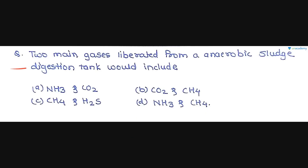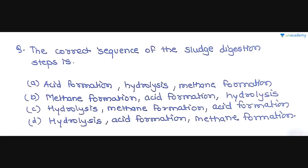The next question is: the main gases liberated from an anaerobic sludge digestion tank are CO2 and CH4, so option B is correct. The following question asks for the correct sequence of the sludge digestion steps — options include various orderings of acid formation, hydrolysis, and methane formation. The correct sequence is hydrolysis, then acid formation, then methane formation, so option D is the correct answer.